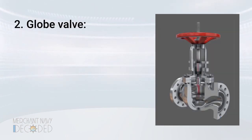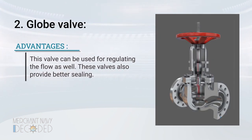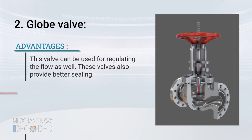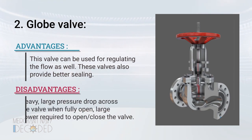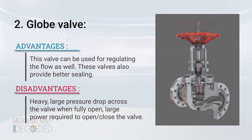Globe valve. Advantages: this valve can be used for regulating the flow as well, and these valves also provide better sealing. Disadvantages: it is heavy, a large pressure drop takes place across the valve when fully open, and large power is required to open and close the valve.